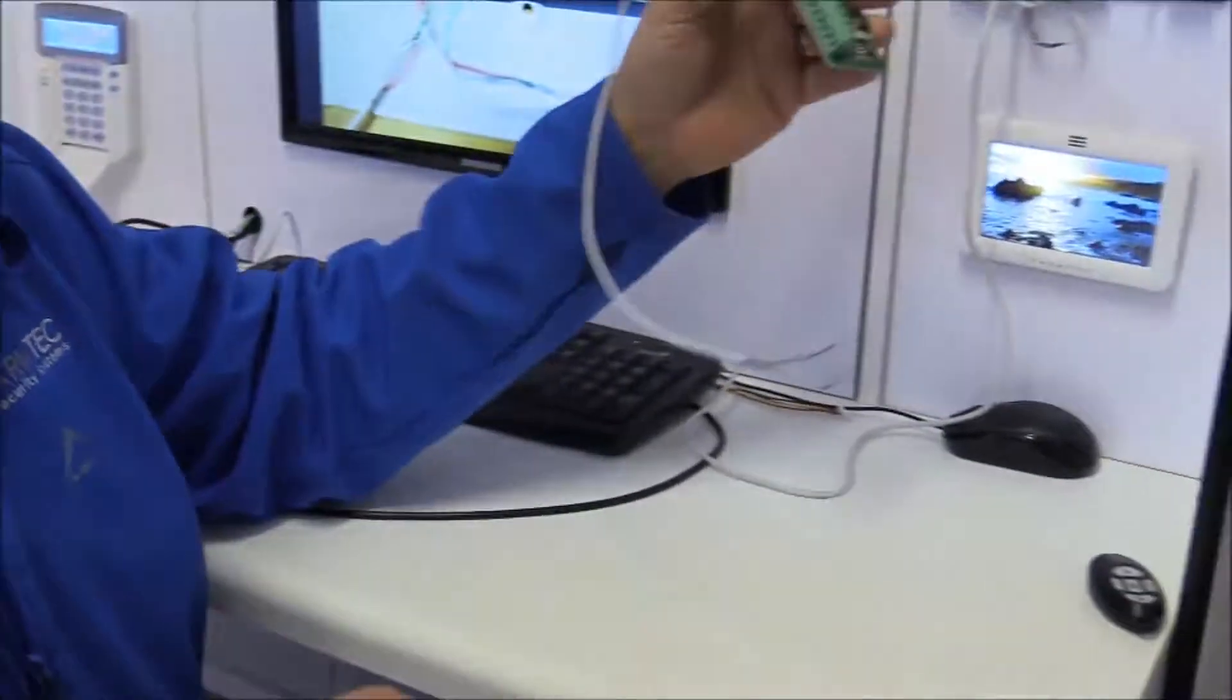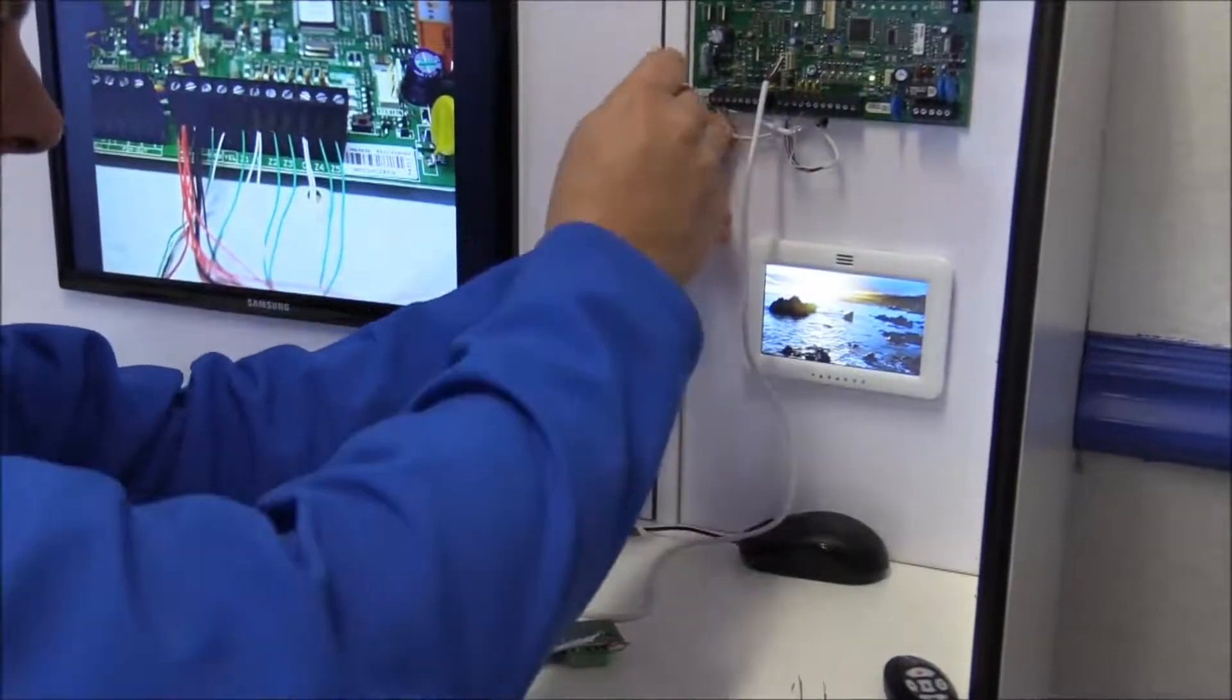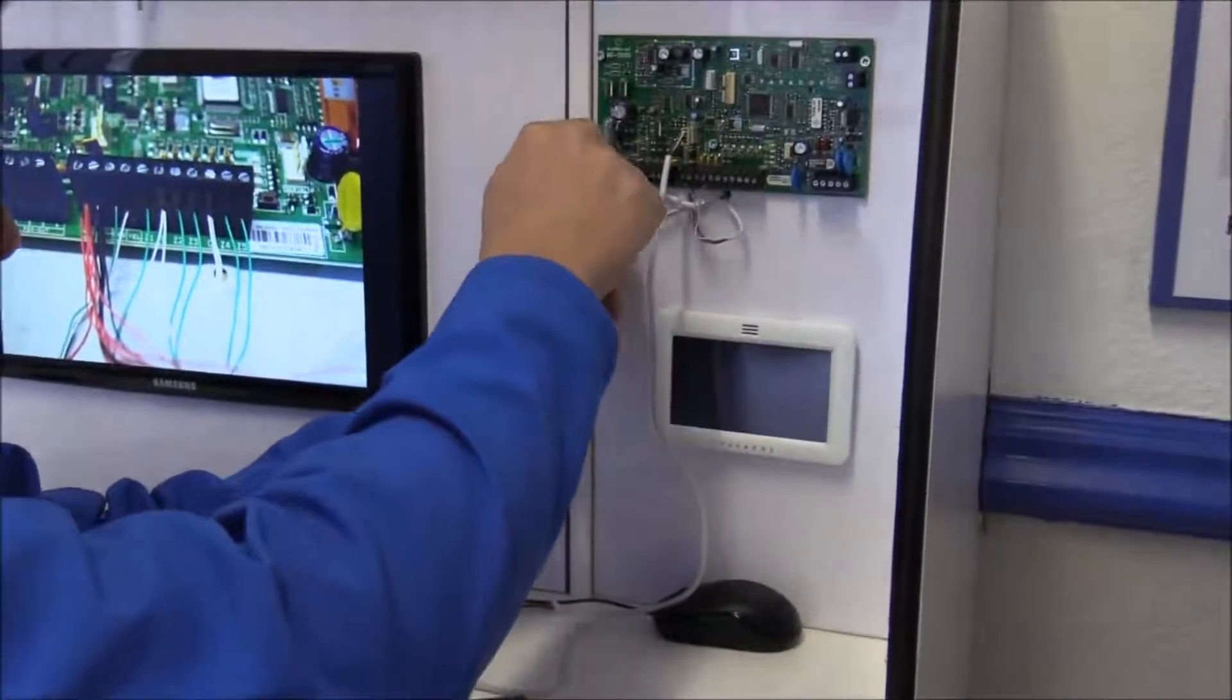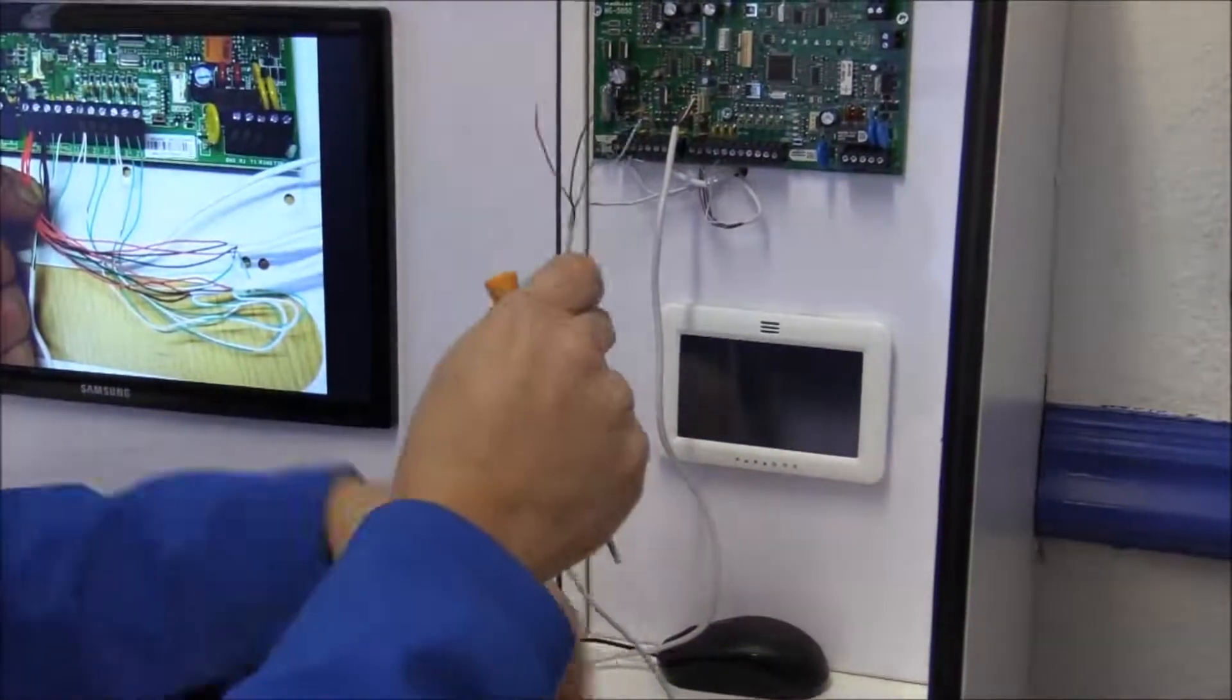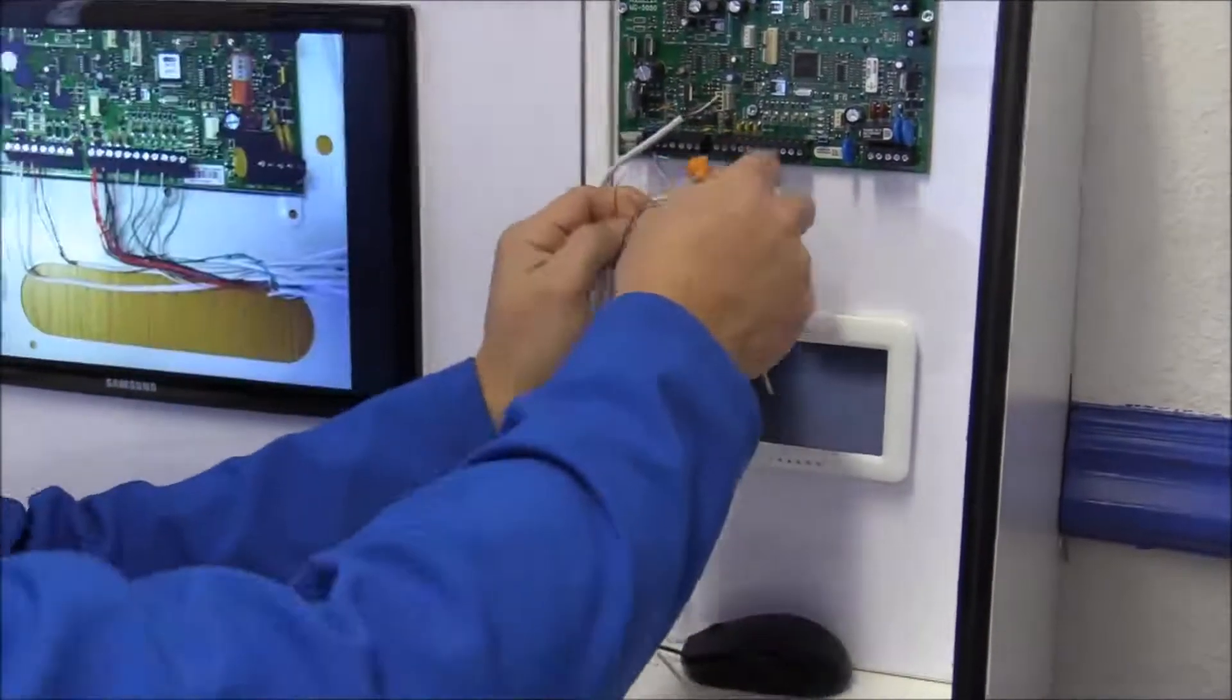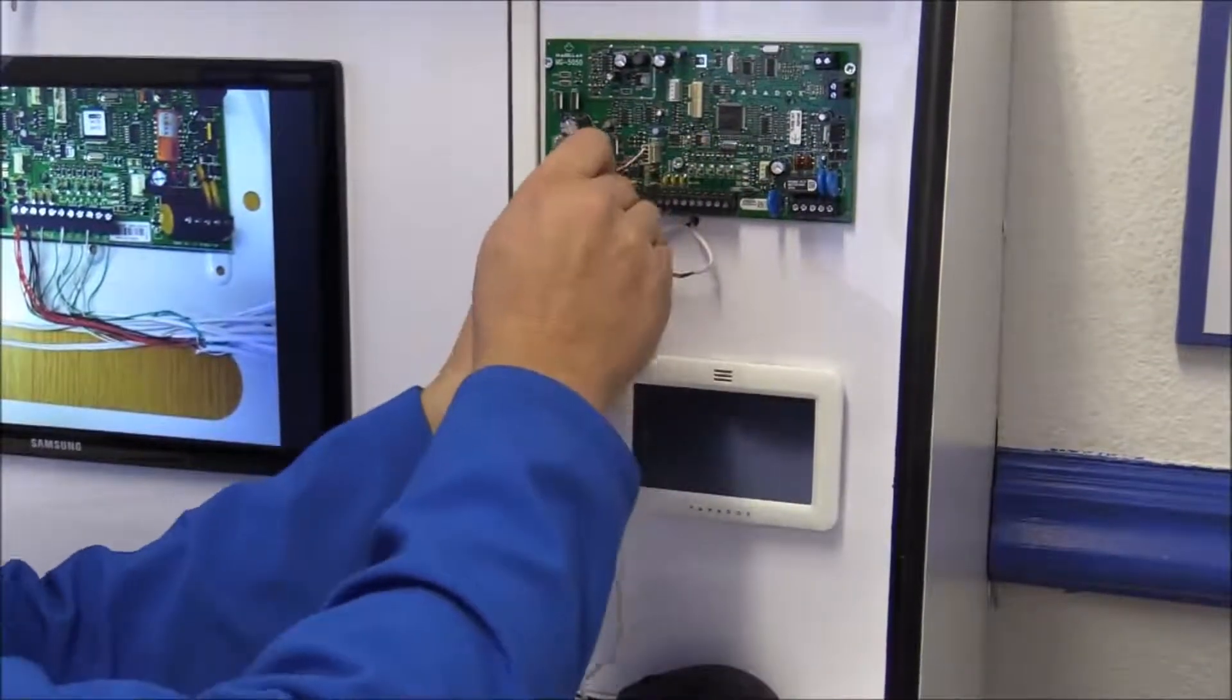The control panel needs to be powered off. So this one is my test panel. Let's just disconnect the AC power for a few seconds. And then I've got many things connected here. Let's just remove all these things.